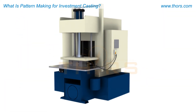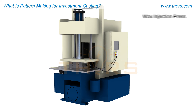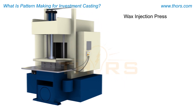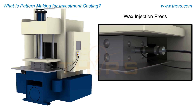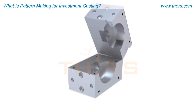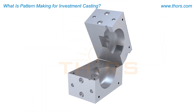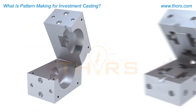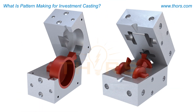The assembled dye goes through a press where it is injected with molten wax to create the pattern. Depending on the part, one injection shot can produce one or more patterns.